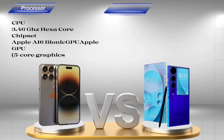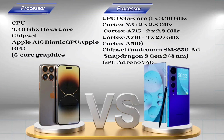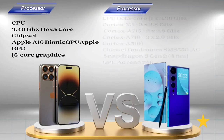Samsung Galaxy S23 Ultra processor: CPU Octa-core — 1x 3.36 GHz Cortex-X3, plus 2x 2.8 GHz Cortex-A715, plus 2x 2.8 GHz Cortex-A710, plus 3x 2.0 GHz Cortex-A510. Chipset: Qualcomm Snapdragon 8 Gen 2 (4nm). GPU: Adreno 740.